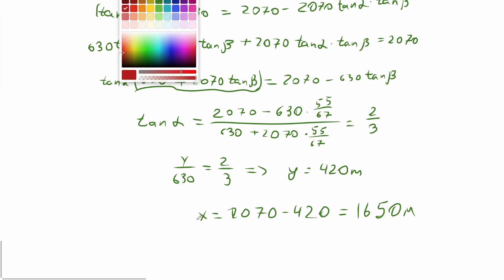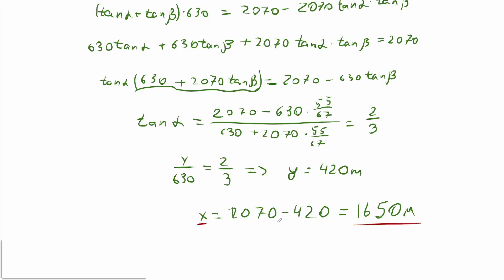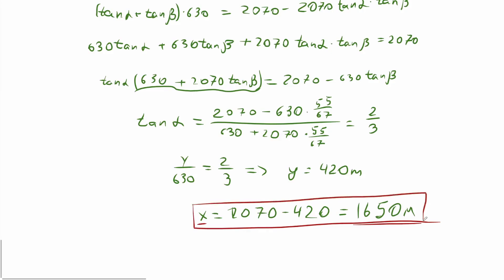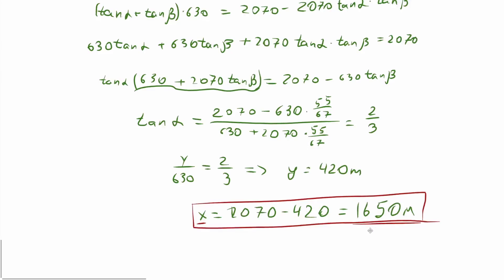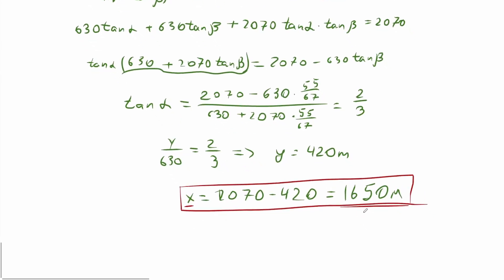That's it — this is the solution to our problem. So x, or the length of BD, is 1650 meters. That's it for today. If you like the video, please like, share, and subscribe — that really helps grow our channel so we can do more interesting problems for you. I'll see you next time.